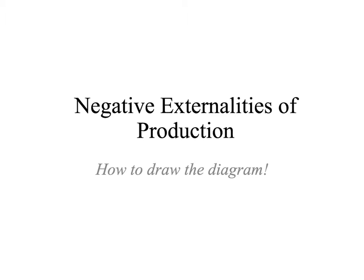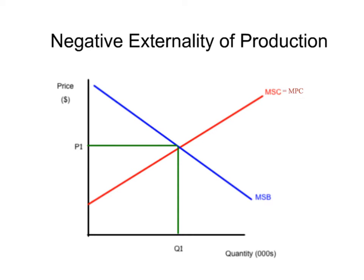And once it is, the cool thing about economics for almost all students is once it's in there, it's in there. So here you go, just the graph. Remember, a negative externality of production means that the production of something is causing an external damage to something else.